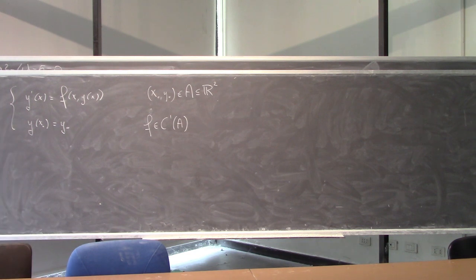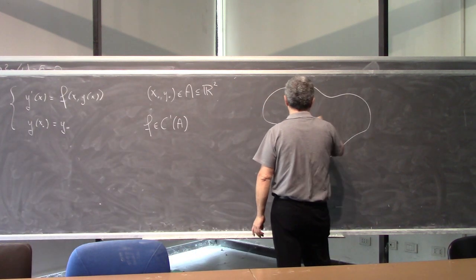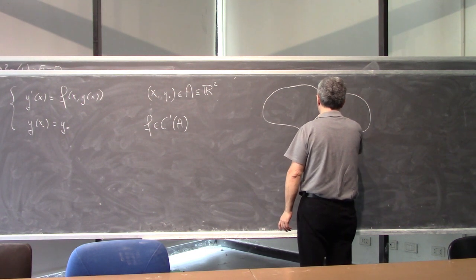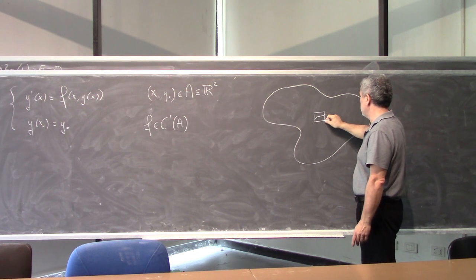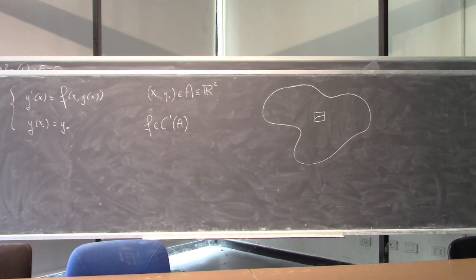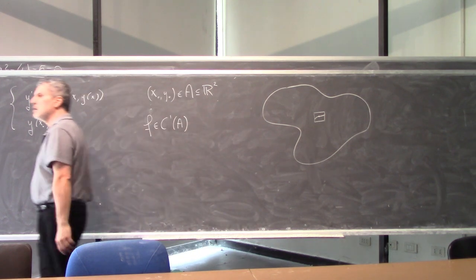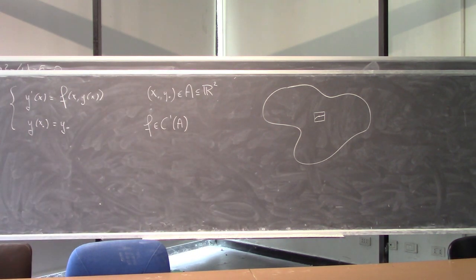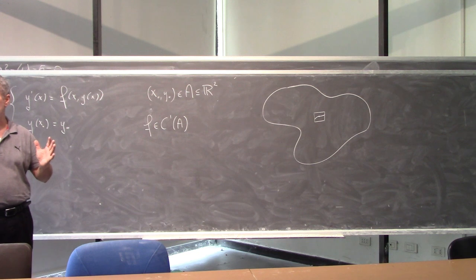Quindi noi sappiamo che esiste una soluzione locale. Questo è il mio A: per un po', in questa 'finestrella', c'è una e una sola soluzione del mio problema di Cauchy. Vorrei sapere fin quando la soluzione esiste.